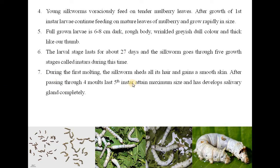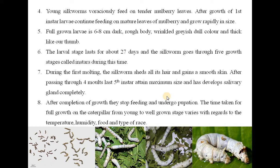During the first molting, the silkworm sheds all its hair and gains smooth skin. After passing through 4 molts, the 5th instar larva attains maximum size and has completely developed salivary glands. After completion of growth, they stop feeding and undergo pupation. The time taken for full growth of the caterpillar varies with regards to temperature, humidity, food and type of race.